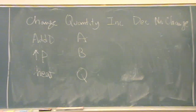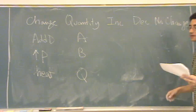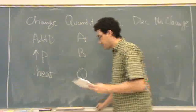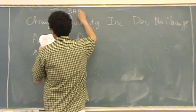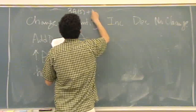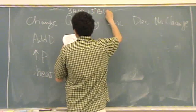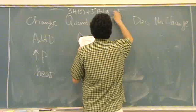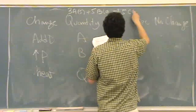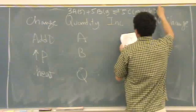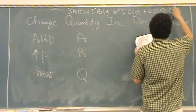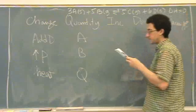Okay, Winter 06, number 15. I didn't write down the reaction, just write that down. It's 3A, and that's a solid, plus 5B, that's a gas, goes to 5C, that's a gas, plus 6D, and that's a solid, and delta H is zero. Oh, fantastic.